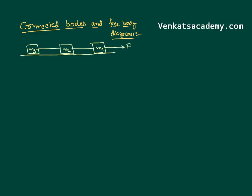Let us consider a scenario like this. We want to talk about connected bodies. In our problem, the connected bodies are three bodies M1, M2, M3. They are connected with light-weighted strings and they are on a frictionless surface. Let us say on M1 we have applied a force F in this direction. So, if the system has to move, it is obvious that it is going to move along the direction of the applied force.